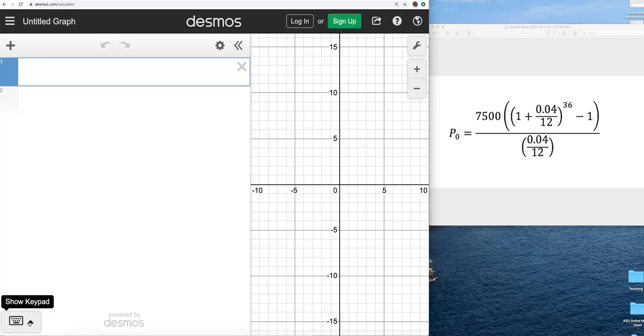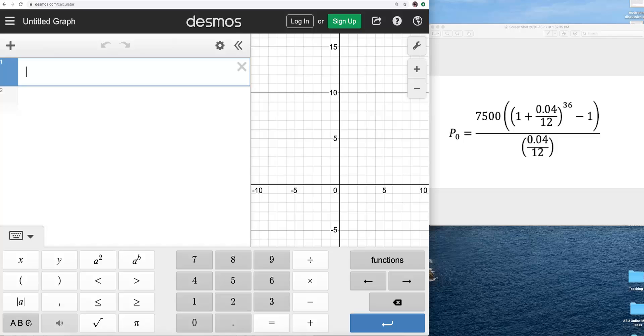Down here in the bottom left is a keypad, and you can activate that keypad, or you can use your keyboard with your computer to actually type the expressions in.